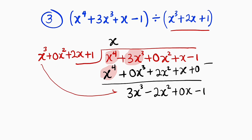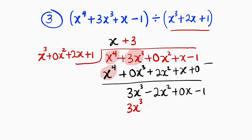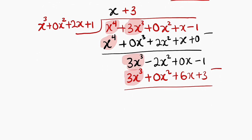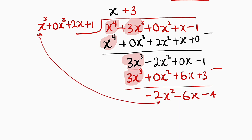x cubed into 3x cubed goes 3 times, so we write plus 3 on top. Multiply 3 by the whole divisor: 3 times x cubed is 3x cubed, 3 times 0x squared is 0x squared, 3 times 2x is 6x, and 3 times 1 is 3. Subtract: 3x cubed minus 3x cubed is 0; negative 2x squared minus 0x squared is negative 2x squared; 0x minus 6x is negative 6x; and negative 1 minus 3 is negative 4. Observe that the degree of the remainder, which is 2, is lower than the degree of the divisor, which is 3. Therefore you can no longer divide — you stop here.